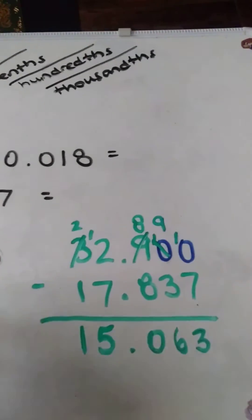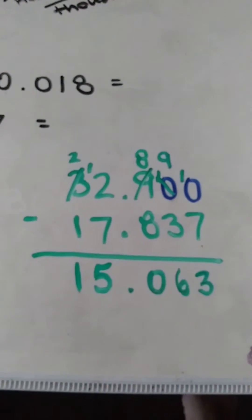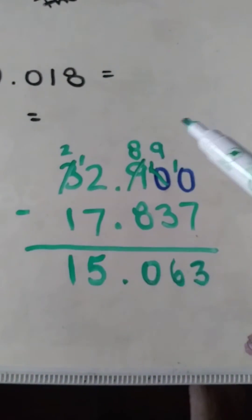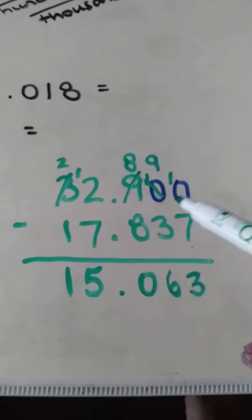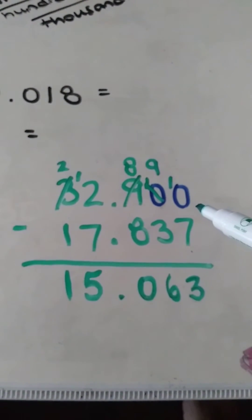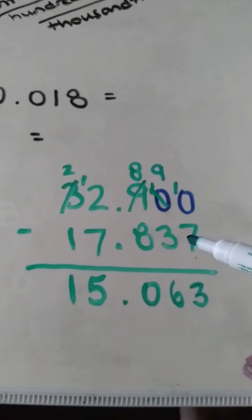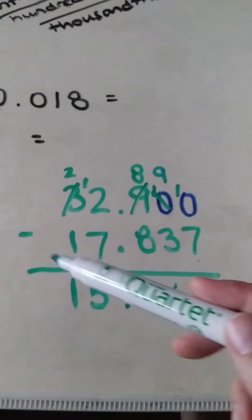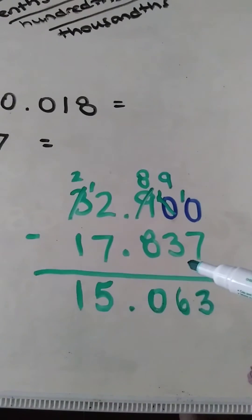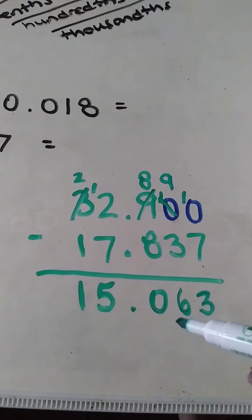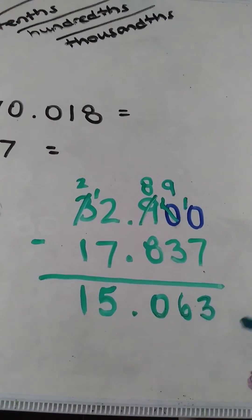And so there we go with the answer to the subtraction of thirty-two and nine tenths, which we added the two zeros at the end as our placeholder to make our subtraction easier for us, to make sure we didn't forget any of the place values, minus seventeen and eight hundred thirty-seven thousandths equals fifteen and sixty-three thousandths.